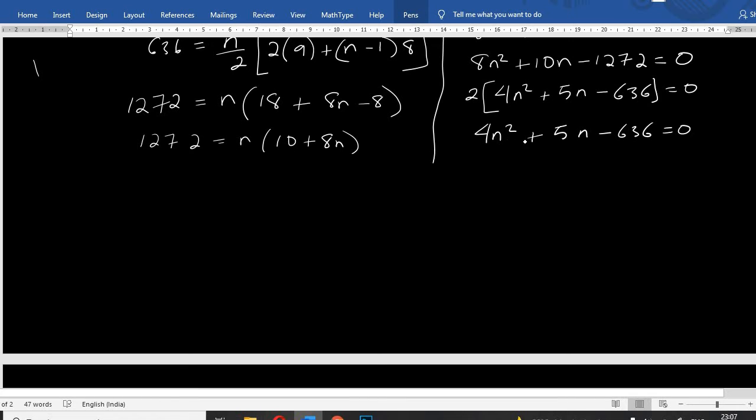Can we factorize 4n squared plus 5n minus 636? The product is 4, 6, 36. The number is very huge. We can factorize.